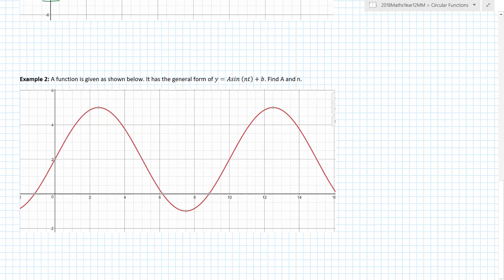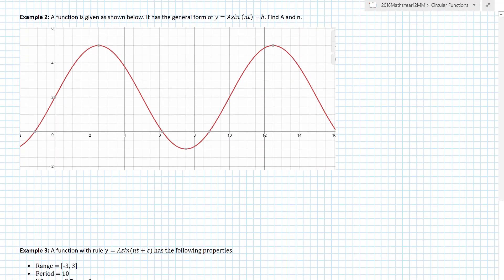Another function is given below. This one obviously has been moved up, like totally moved up, but we can use the information to find a, n, and b. First things first, what is my amplitude? Let's look at the highest value, it's five. What's the lowest value? It's negative one. That means there's a difference of six, half of that is three. So before I even know, I know my amplitude is equal to three.